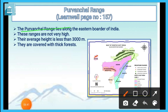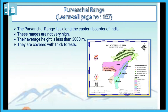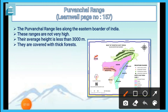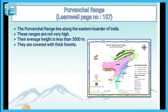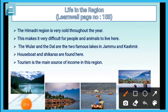The Purwanchal range lies along the eastern border of India. These ranges are not very high; their average height is less than 3,000 meters. They are covered with thick forest.